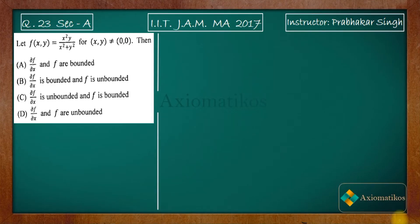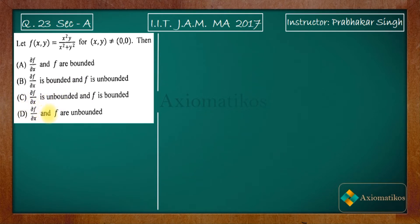Hello dear students, welcome to ExeoMatic course. This video is part of the solution series for IIT JAM 2017, and we are doing Problem 23 of Section A. Let f(x,y) be given by this expression for nonzero x and y. We have to check whether ∂f/∂x and f are bounded or unbounded.